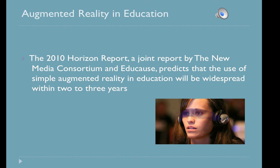All of the emerging trends in this year's report have a relationship to augmented reality: electronic books, mobile learning, open content, gesture-based computing, and visual data analysis.